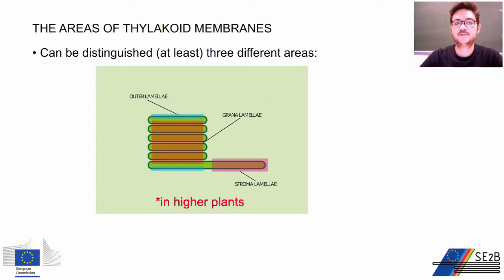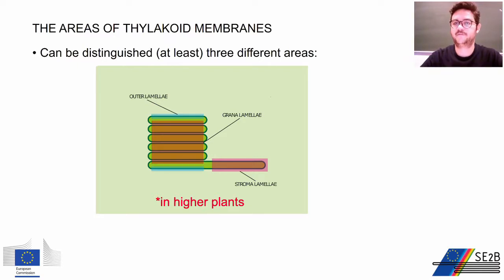The combination of all those factors determines the architecture of the thylakoid membrane. First of all, we have to give a name to the different areas of the thylakoids. The marginal region of the grana are called other lamellae. Grana lamellae are the appressed membranes within the grana. Stromal lamellae are the membranes that connect the different grana. The complexes are distributed in these areas according to their properties.